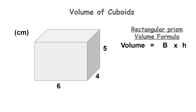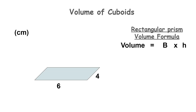We need to calculate the area of the shape at the bottom of our figure, which represents capital B in our formula. The shape at the bottom of our rectangular prism is a rectangle. Now that we know the base shape is a rectangle, let's calculate the area of that shape.